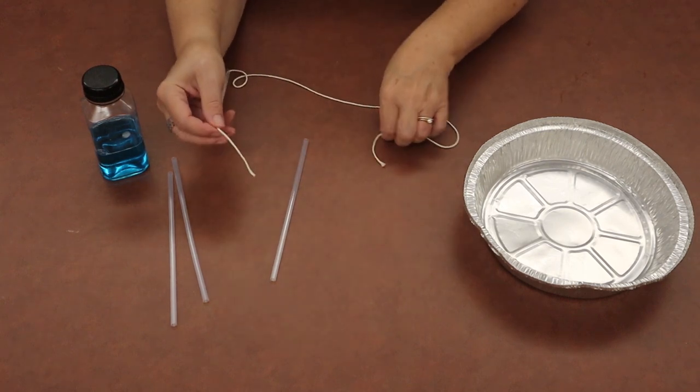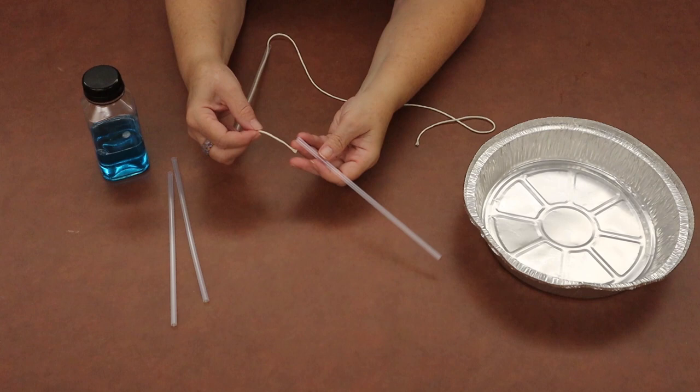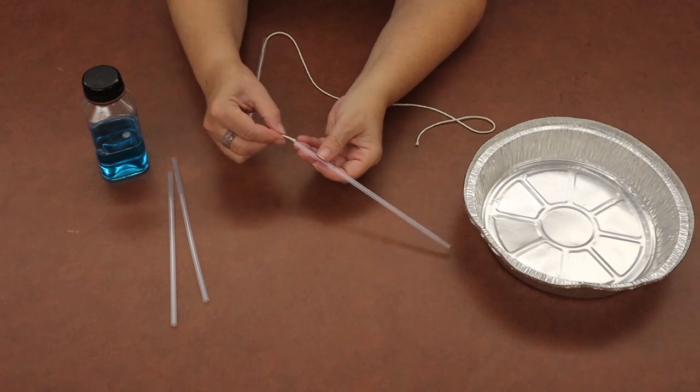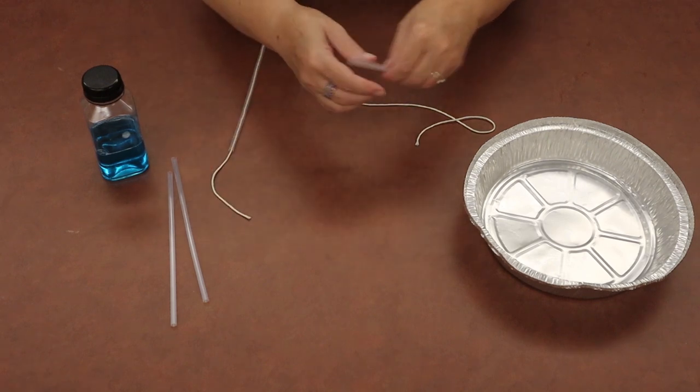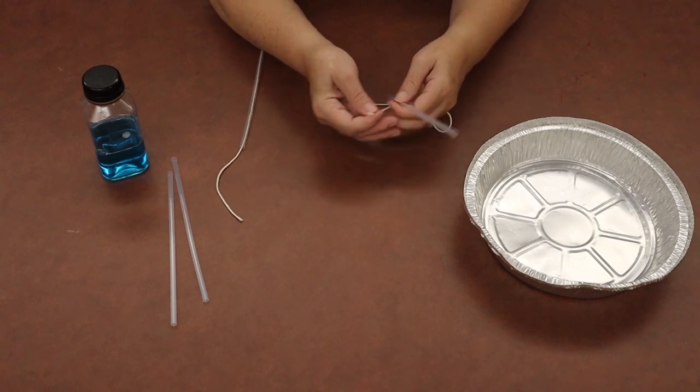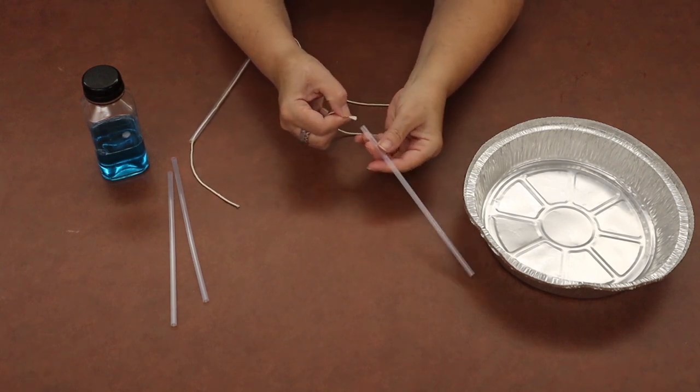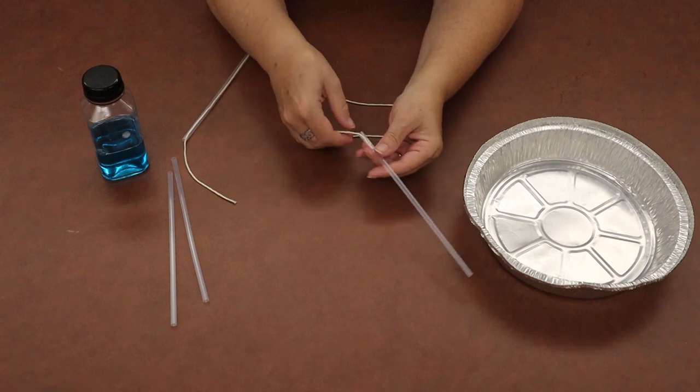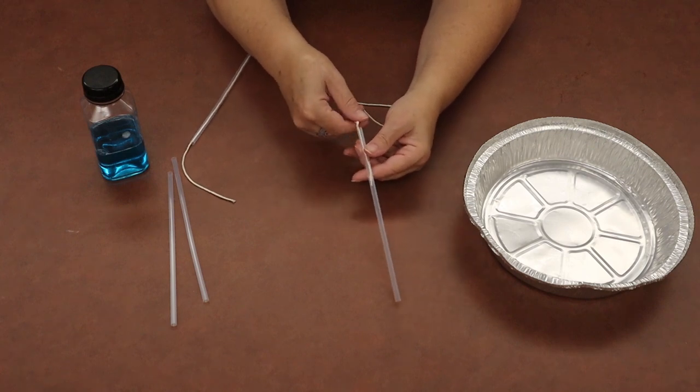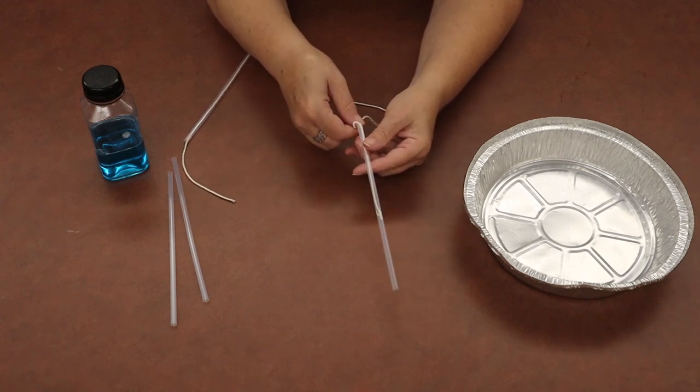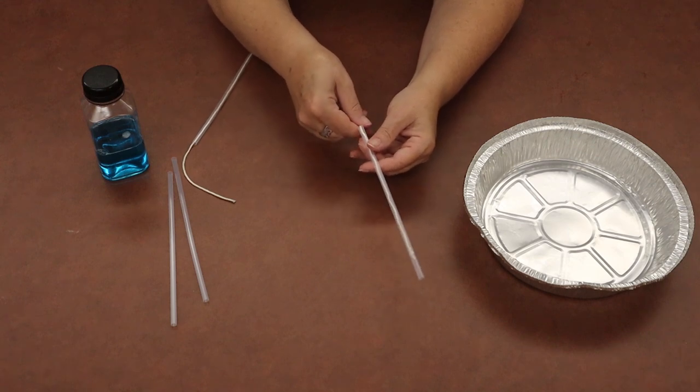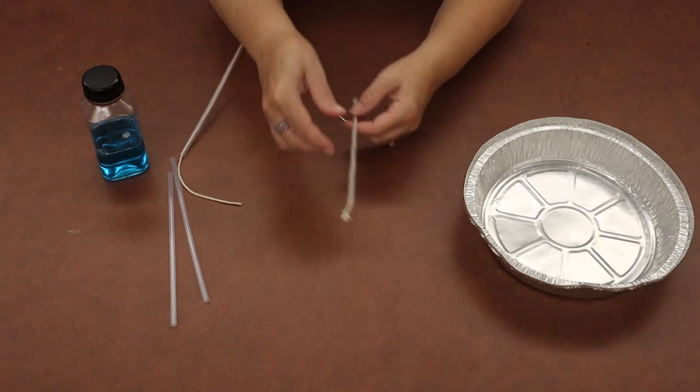You can either start the second straw right after that, or if you want, you can start it on the other end. It doesn't really matter. Just make sure your threads are together. Stick the string in the end of the straw, poke it down through there until it comes out the other end.